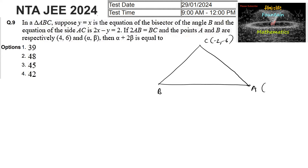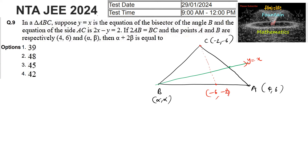With C = (-2, -6), A = (4, 6), and B = (α, α), since y = x is the bisector, the image of point C with respect to the line y = x lies on side AB. The image is found by swapping coordinates: C' = (-6, -2), which lies on side AB.